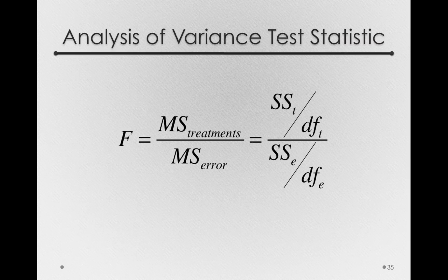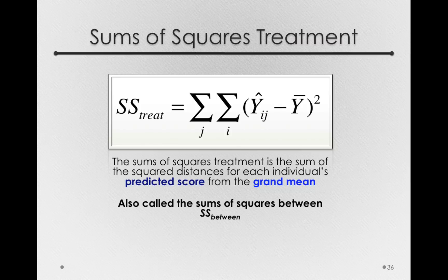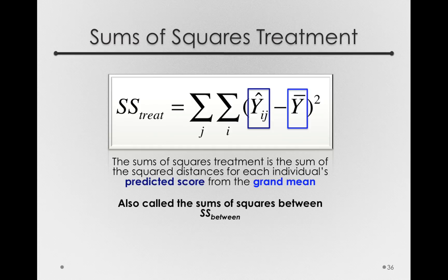The mean square for treatment is the sums of squares for treatment — some deviations among the t's in our sample model — divided by the degrees of freedom. The sums of squares for treatment, like any sums of squares, are deviations: specifically, the sum of the squared distances for each individual's predicted score from the grand mean. In other words, for each individual, we take their predicted score — which is just their group mean — minus the grand mean, squared. In an analysis of variance model, we also call this the sums of squares between, as in between groups, versus the sums of squares within a group.